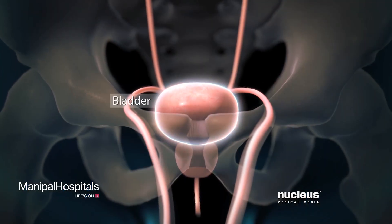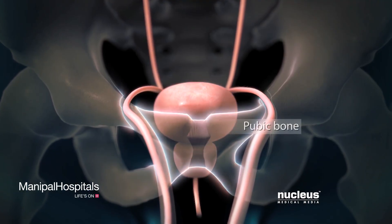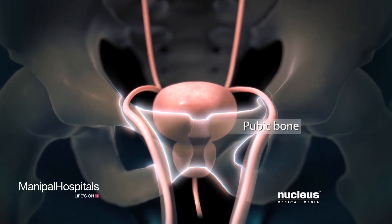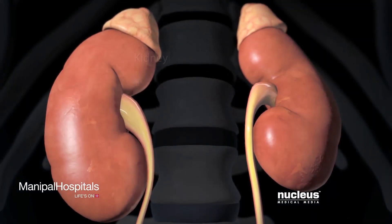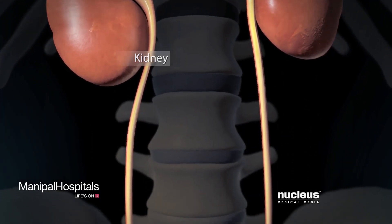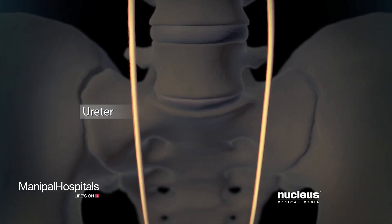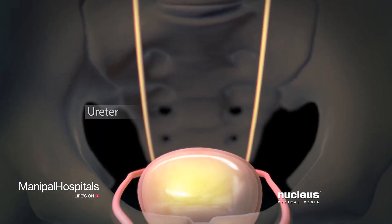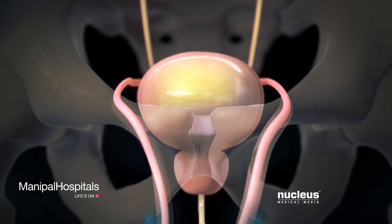Your bladder is located in your pelvis, behind your pubic bone. Your kidneys make urine, which travels down the ureters to your bladder, where it is stored until you are ready to urinate.